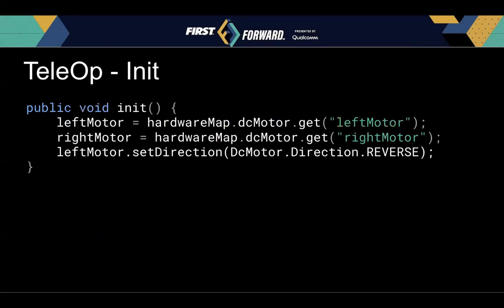Inside the init function, we're going to assign our motor variables values. We get access to a hardware map, which is defined on the robot controller — that's the hardware configuration you set up with the REV hubs or the control hub. We tell it that we're getting a DC motor named 'left motor.' You need to have a left motor configured before this code will work, otherwise it'll throw an exception. So before you run this code, you have to tell it 'I have a left motor — it's a DC motor on port three.' We do the same with the right motor, and because the motors face different directions, we set the left motor to run in reverse so both motors turn the wheels forward.